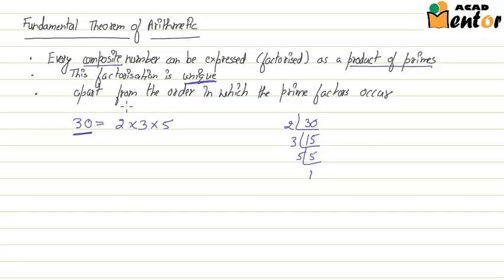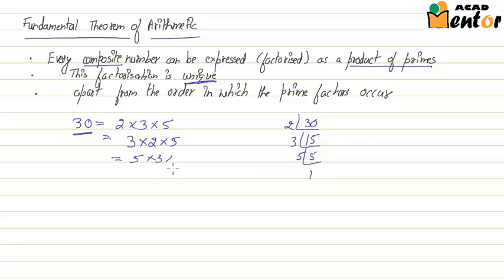The last point states that this factorization is not affected by the order in which these prime factors occur. So 30 can also be written as 3 multiplied by 2 multiplied by 5, or 5 multiplied by 3 multiplied by 2, and so on. The order of these prime numbers does not affect the result of 30.